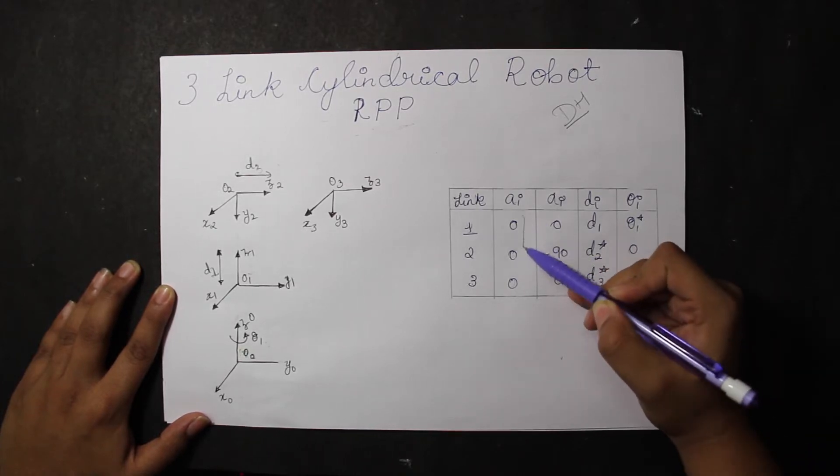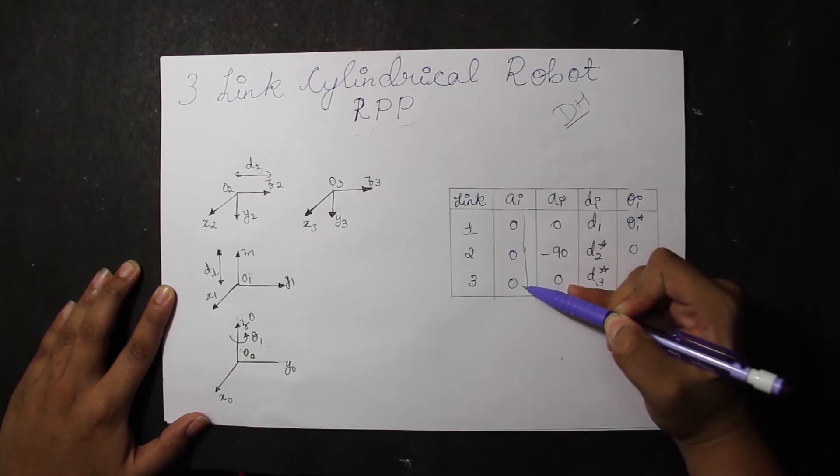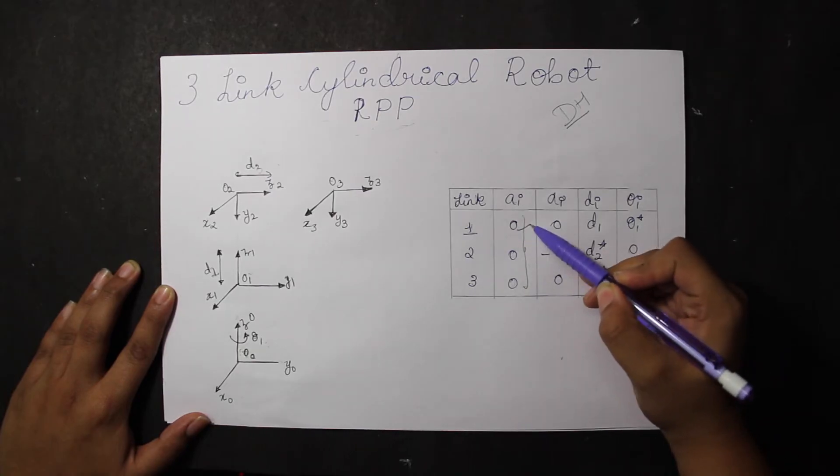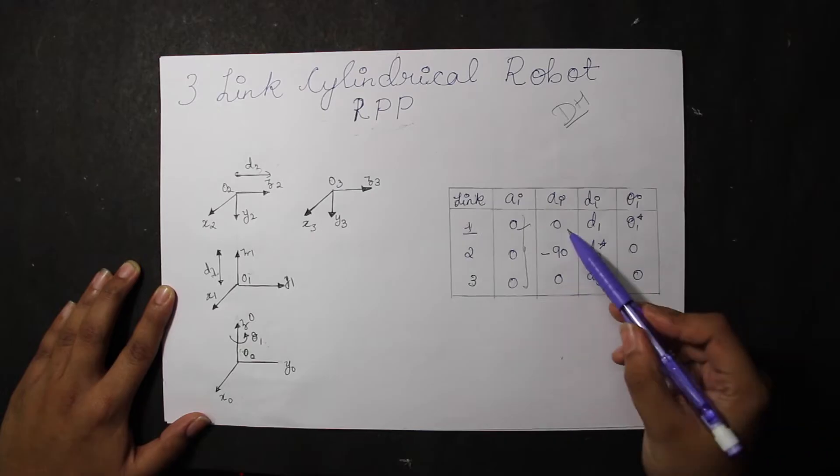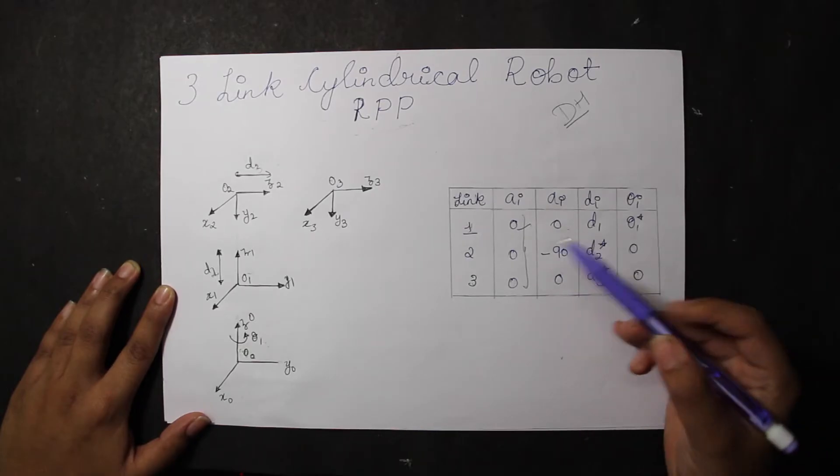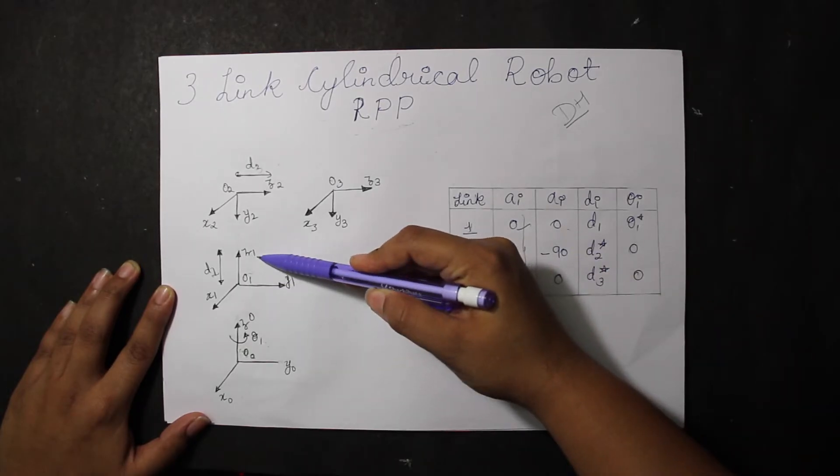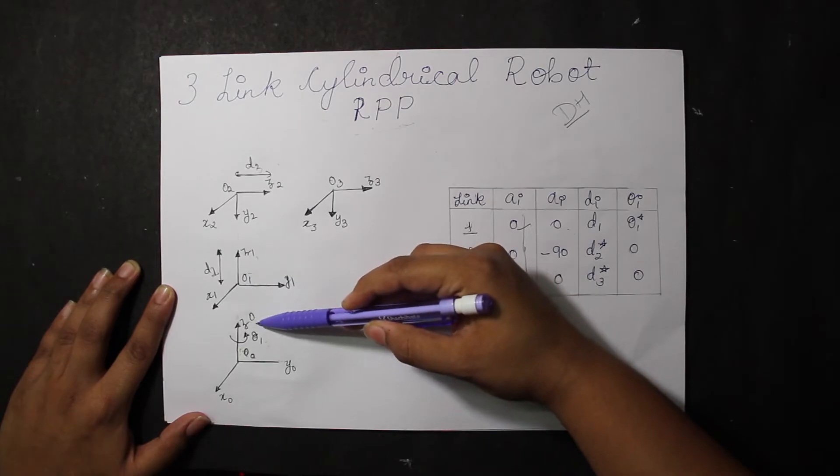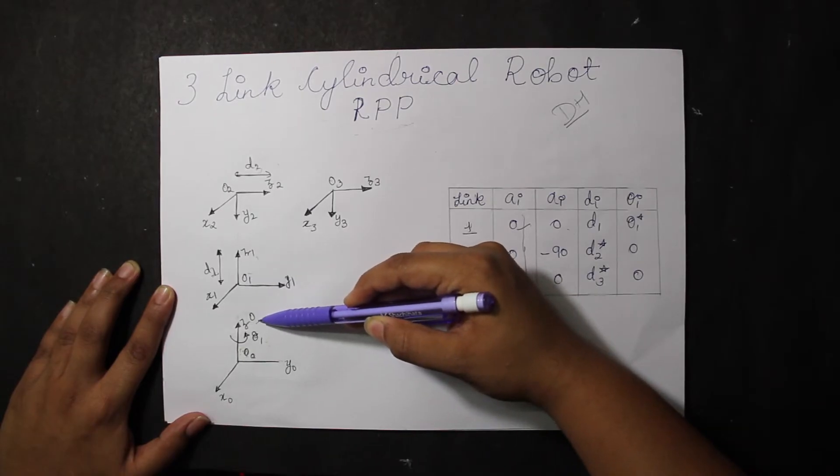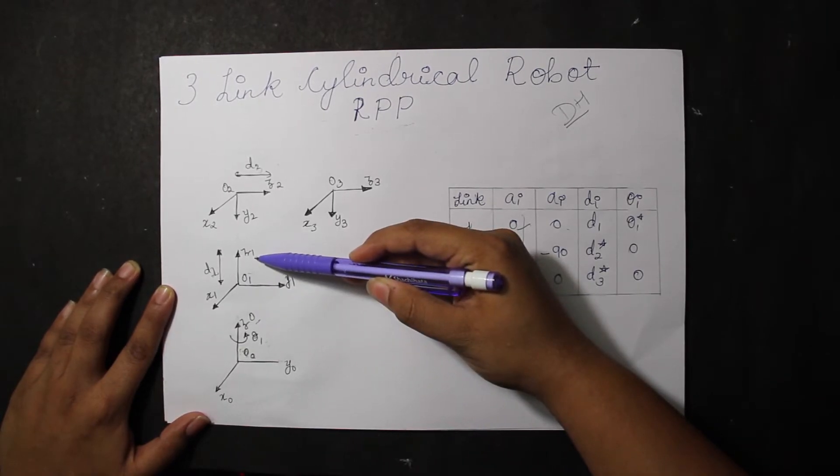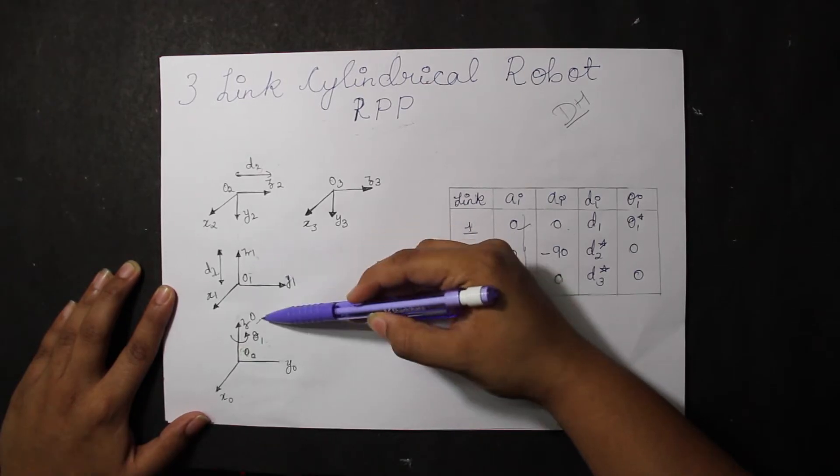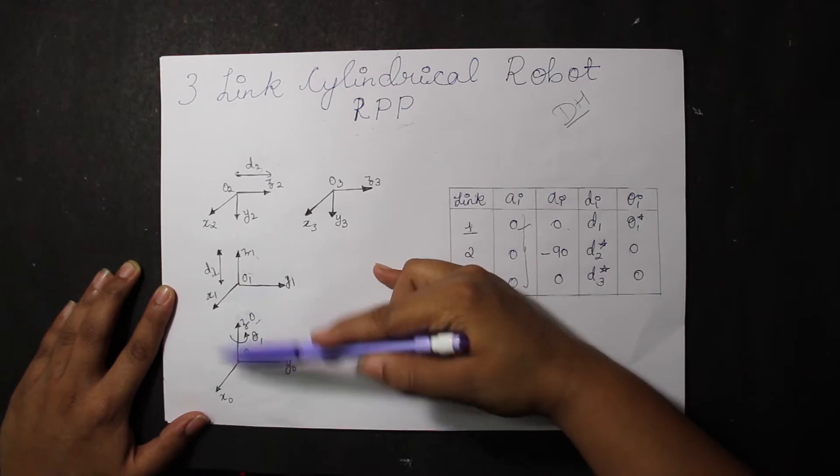Looking at the alpha I, we know that the first one, the first link, link 1, is not rotated since we have z naught and z1, x1 and x naught, and y naught and y1 in the same frame. That is, we give out alpha I equals to 0.